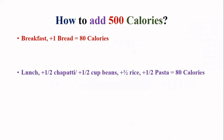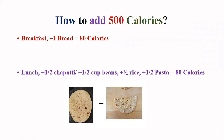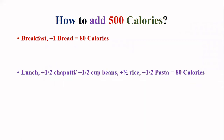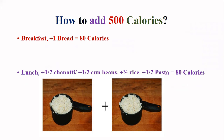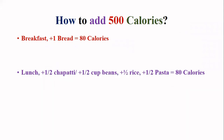Similarly, in lunch, if you are taking 1 chapati, start taking 1 and a half chapati. If you are taking half a cup of beans, start taking 1 cup. If you are taking half a cup of rice, start taking 1 cup. If you are taking half a cup of pasta, start taking 1 cup. Adding half a chapati, or half a cup of beans, rice, or pasta will each add 80 calories.